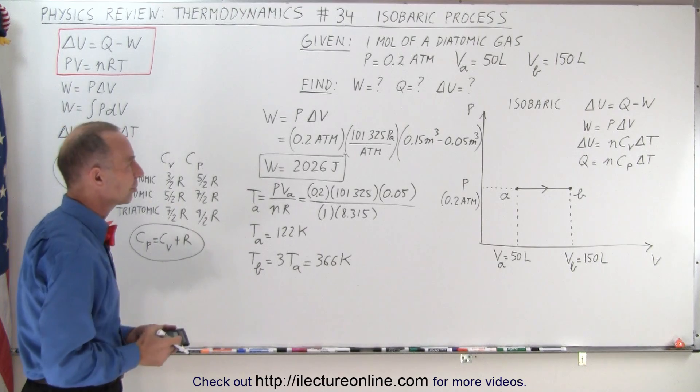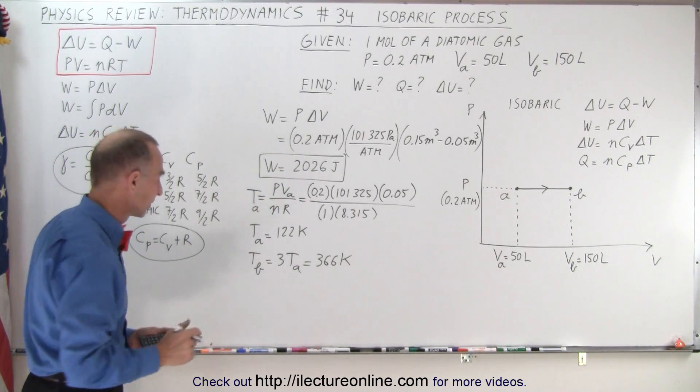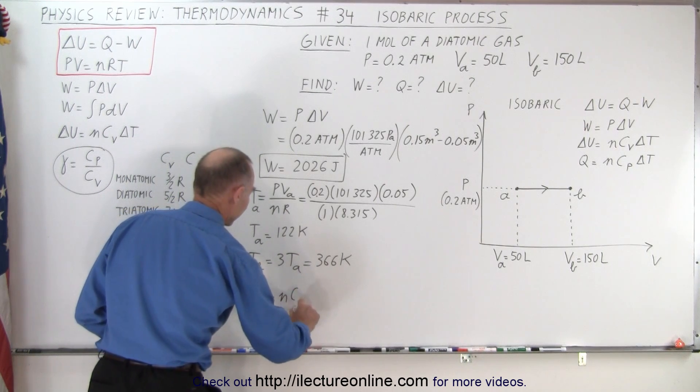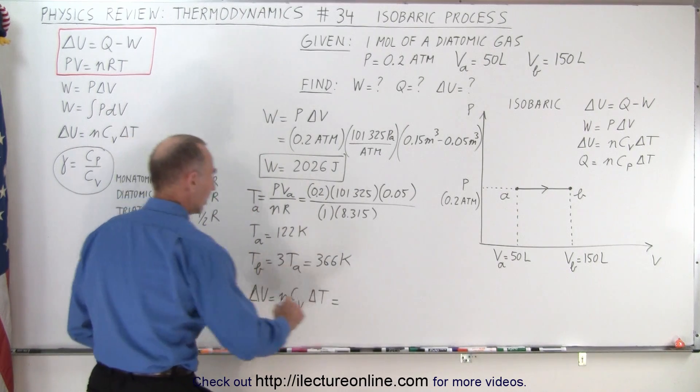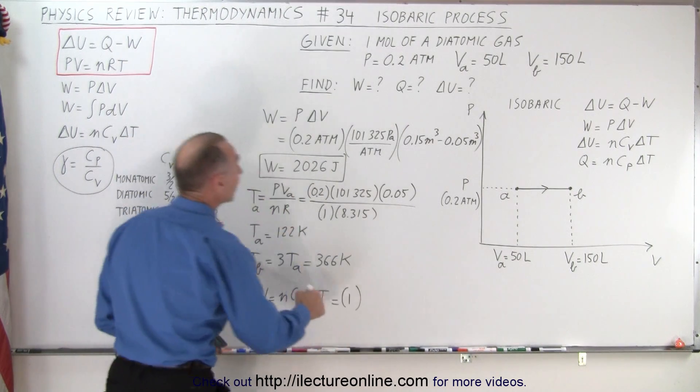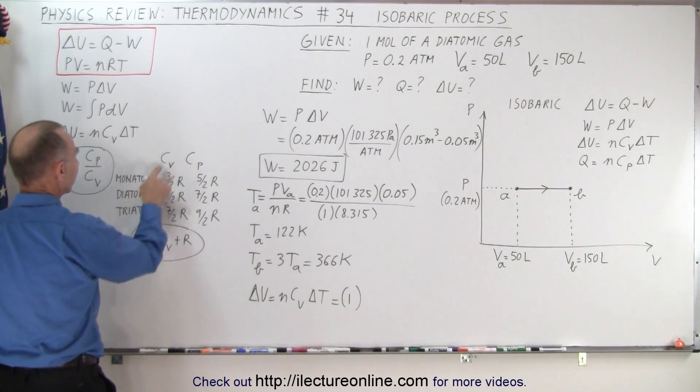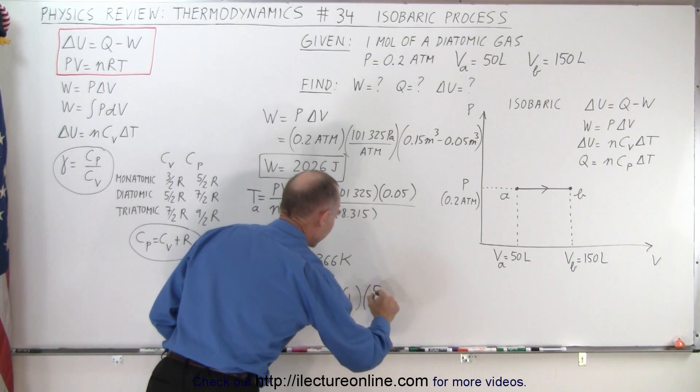So now that we know the two temperatures, we can easily now calculate delta U and Q. First of all, delta U. So delta U is equal to n times C_v times delta T. And so n is 1. C_v, we're given that it's a mole of diatomic gas, so we go to diatomic gas. C_v is 5 over 2 R.